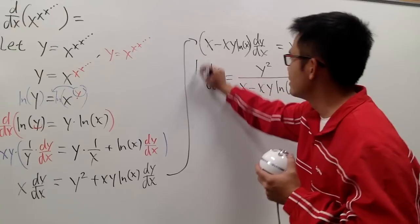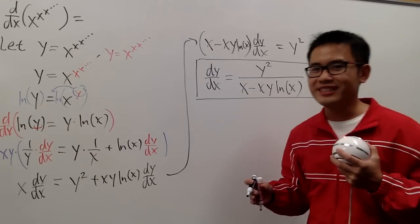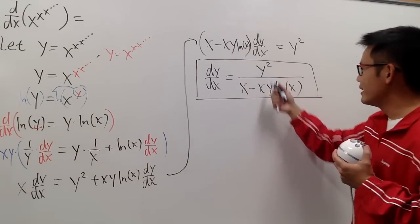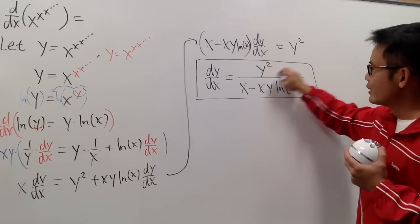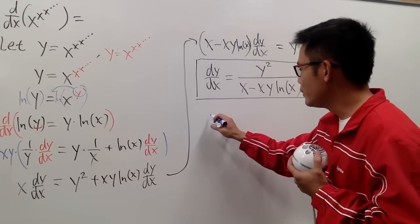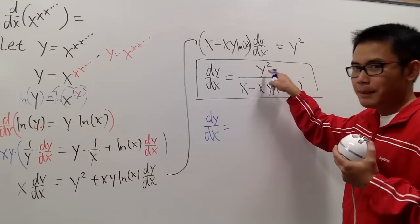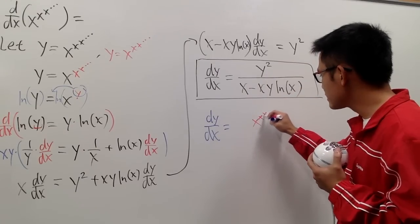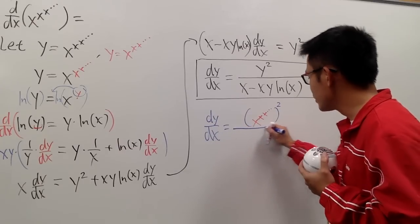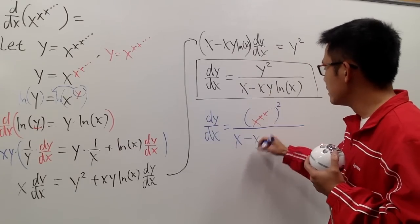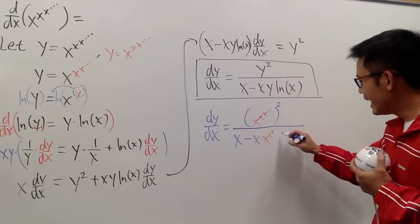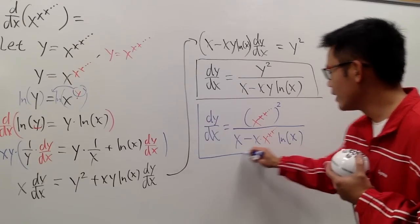And this right here is the answer — pretty cool. If you want, you can substitute y back as x to the x to the x dot dot dot, so the numerator becomes (x^x^x^...)² and the denominator is x minus x times (x^x^x^...) times ln x. Depends on how you want your final answer. Let me write that in blue for clarity: dy/dx equals that infinite tower squared on top, divided by x minus x times the infinite tower times ln x.